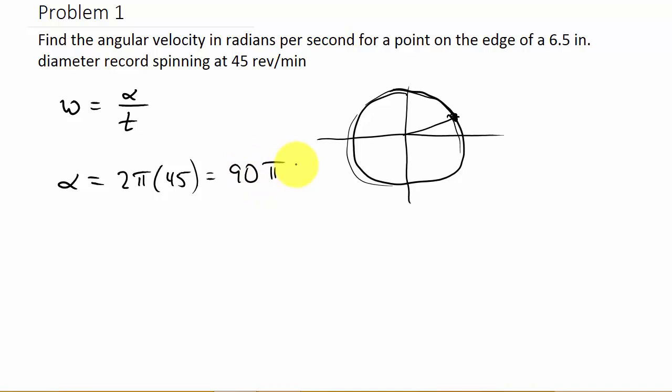There's alpha. And what time did it take it to do it in? Well, one minute. So omega, or the angular velocity, is alpha, which is 90 pi, over t, which is one minute. So that's 90 pi, and that's radians per minute.